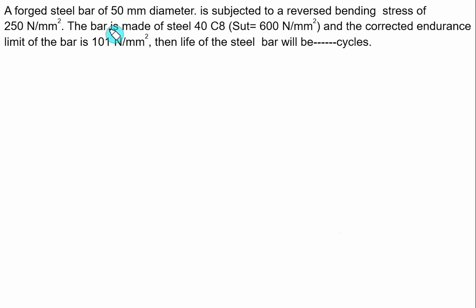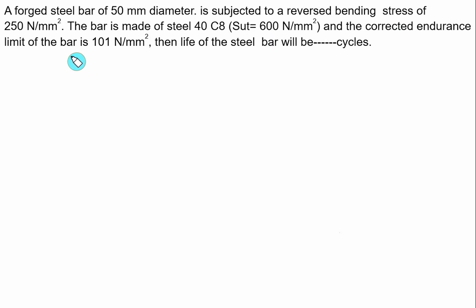A forged steel bar of 50 mm diameter is subjected to reverse bending stress of 250 MPa. The bar is made of steel 4C8 with SUT equal to 600. The corrected endurance limit of the bar is given as SE equal to 101 MPa. The static stress is given as 250 MPa. Find the life of the steel bar.